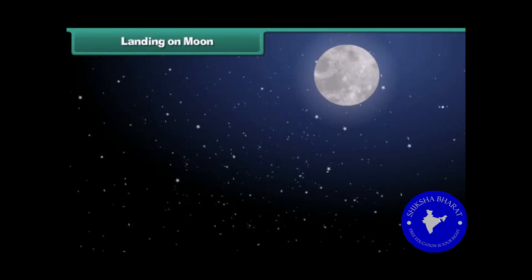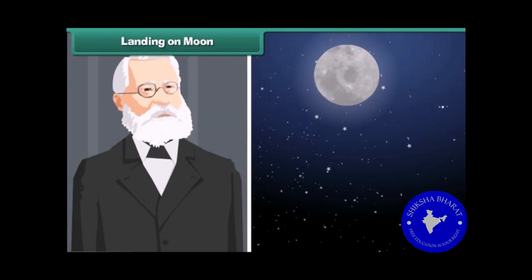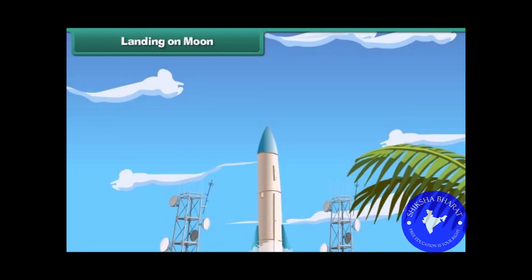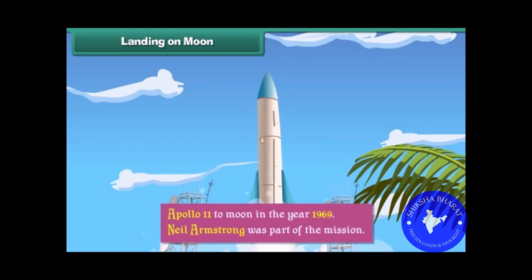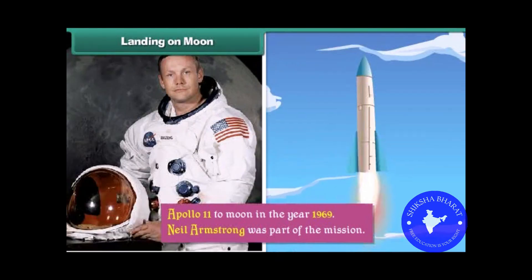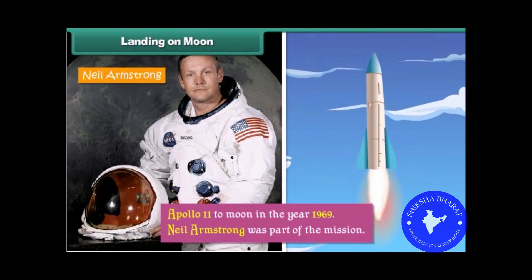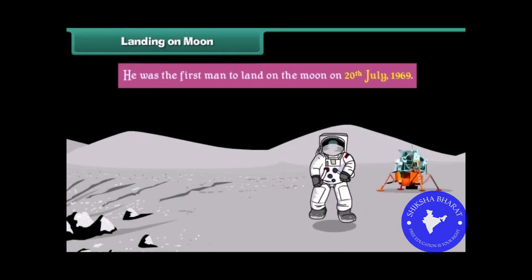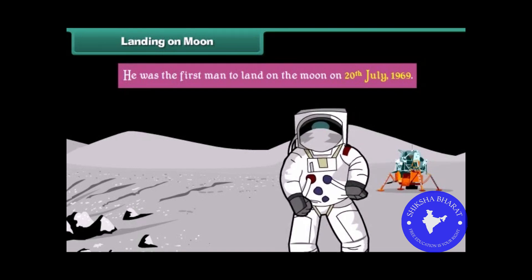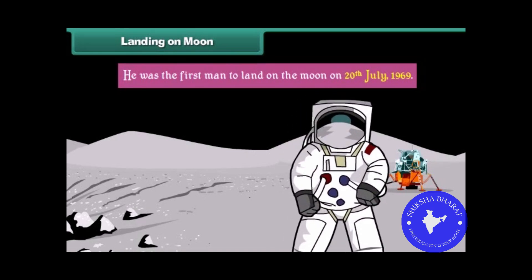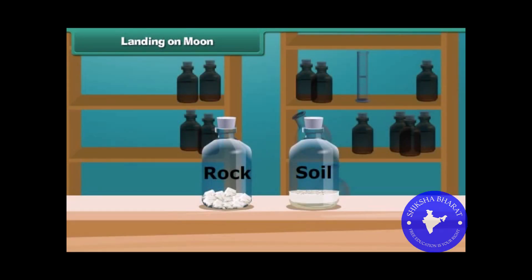Even though life is impossible on the Moon, it continues to fascinate scientists. They wanted to learn more about it, therefore they sent a mission called Apollo 11 to the Moon in the year 1969. Neil Armstrong was part of the mission. He was the first man to land on the Moon on 20th July 1969. He performed various experiments on the Moon and brought back samples of soil and rock.